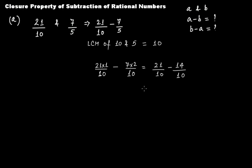Now since these two are now like rational numbers because their denominators are the same, so this is 10, and this becomes 21 minus 14. You get 7 over 10.